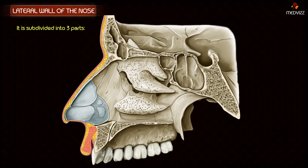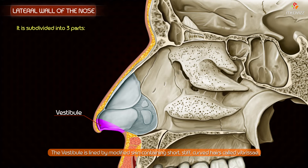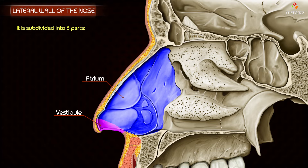The lateral wall can be subdivided into three parts: a small depressed area in the anterior part called the vestibule, which is lined by modified skin containing short, stiff, curved hairs called vibrissae; the middle part known as the atrium of the middle meatus; and the posterior part which contains the conchae and meatuses.